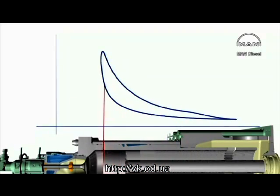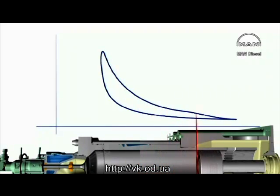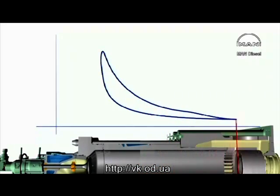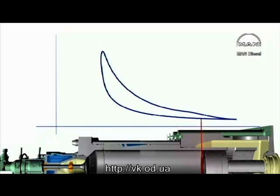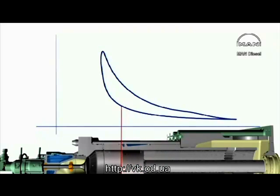The diagram shows that the pressure is almost equal to the scavenge air pressure when the scavenge ports are uncovered. The exhaust valve and scavenge ports are then closed, the air is compressed, and when the fuel is injected and ignited, the pressure will rise rapidly and remain at maximum during continued injection.